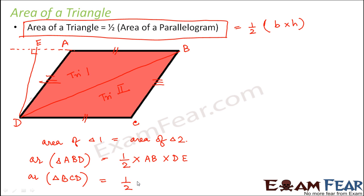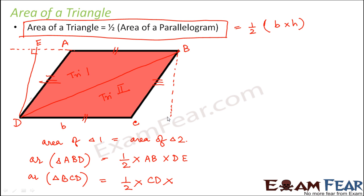For triangle BCD, it's again half times base times height. If we take CD as the base, the height is the perpendicular drawn from vertex B onto CD. Let's call this point F, so the area is half times CD times BF.